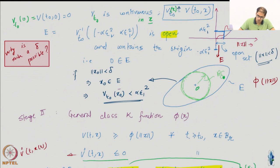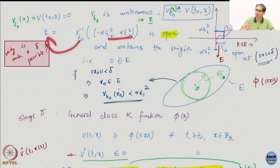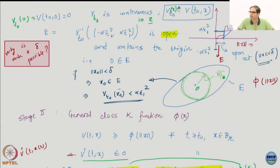This is a very analysis-based proof. We have constructed an open set by taking the inverse image — this is why I told you that the inverse images of the V functions are involved. The idea is: take the E set which is the inverse of this open set. Within the E set, I know I can get a delta ball. All initial conditions starting inside the delta ball are inside the E set, and because they are inside the E set, they can never map me out of alpha * epsilon_1 squared.